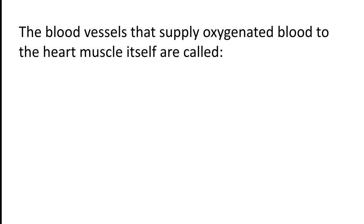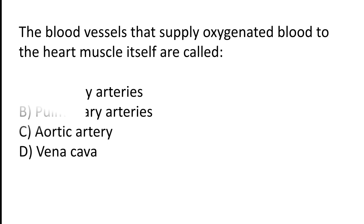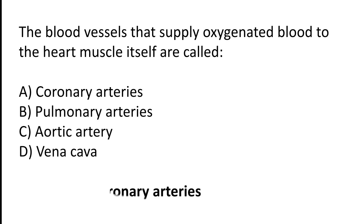The blood vessels that supply oxygenated blood to the heart muscle itself are called: Coronary arteries, pulmonary arteries, pulmonary arteries, or pulmonary arteries. The correct answer is option A. The blood vessels that supply oxygenated blood to the heart muscle itself are called coronary arteries.